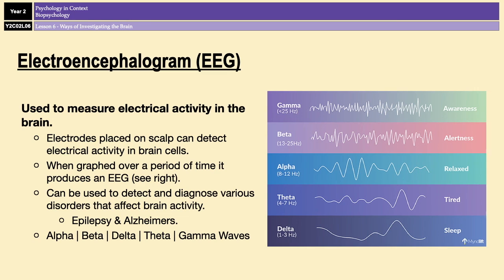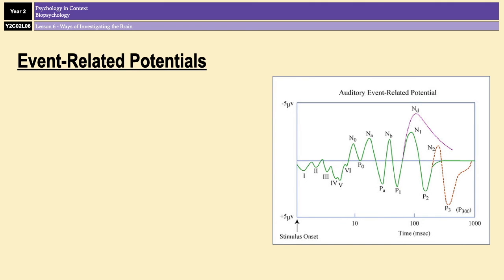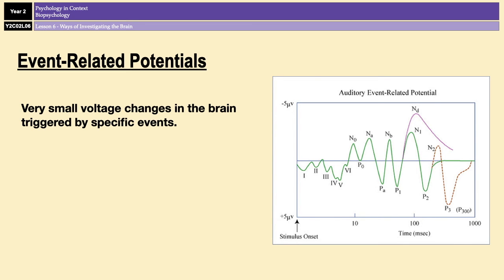Although EEGs have a lot of scientific and clinical applications, in its raw form it's very crude and an overly general measure of brain activity. However, hidden within the data produced by EEGs are all of the neural responses associated with specific sensory, cognitive, and motor events. That brings us to our next method: event-related potentials. ERPs are very small voltage changes in the brain triggered by specific events, like the cognitive processing of a particular stimulus, such as listening to music or looking at a picture.